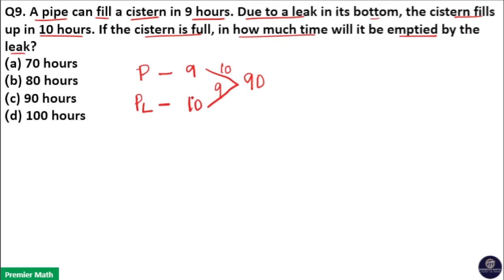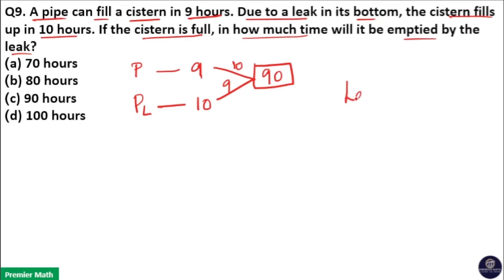So here the leakage is 10 minus 9, which is 1 liter. That means leak efficiency or leakage is 1 liter per hour.